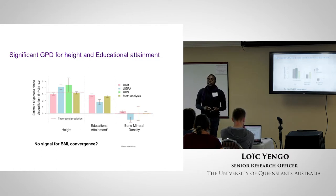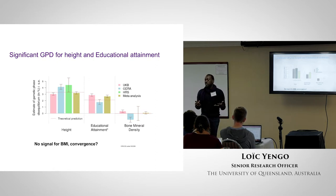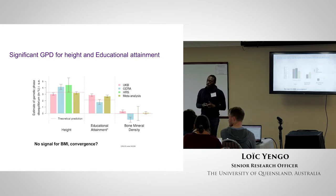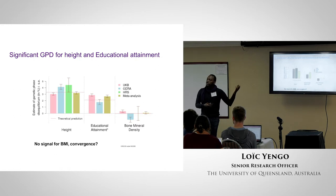Even with Patrick's more general method that takes into account correlations between all the chromosomes, there's still no signal for BMI. I wonder if the Robinson method didn't fully correct for stratification. In terms of stratification, BMI is less stratified than height, so if there was residual stratification, we'd probably see some inflation in the height result as well.